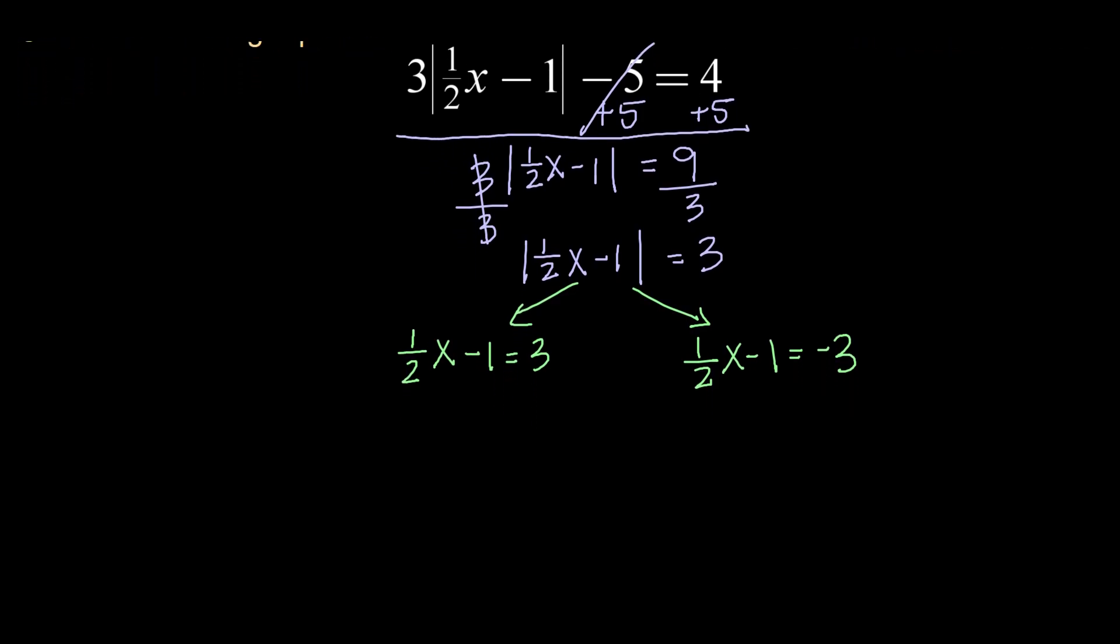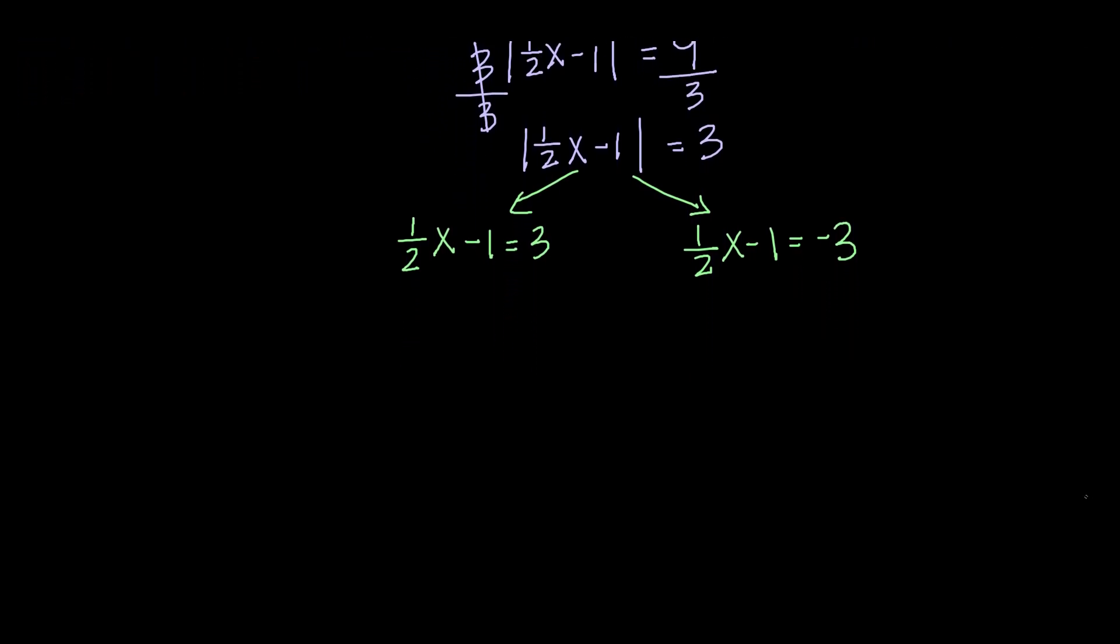Now we'll work on solving these two versions of our equation. So, I'll start by adding 1 to both sides here. 1 half x equals 3 plus 1 or 4.